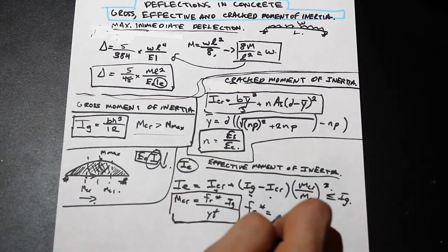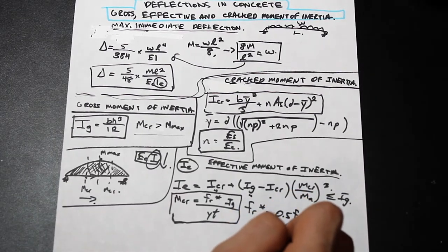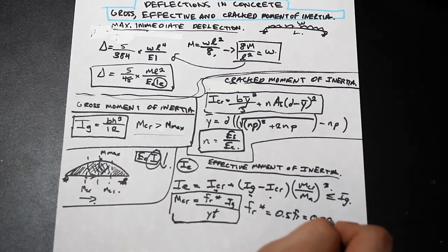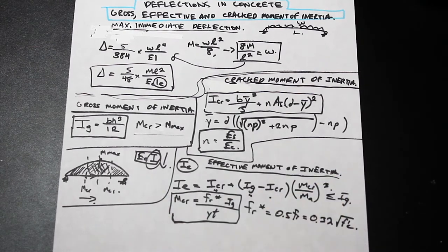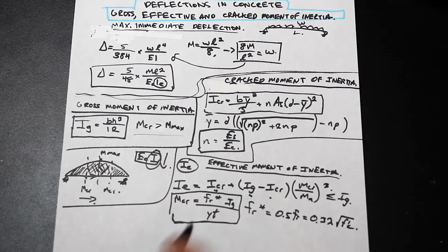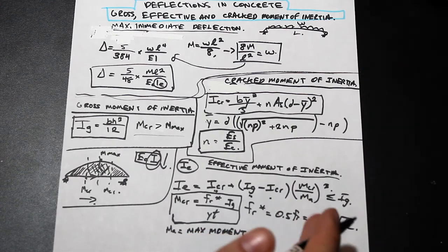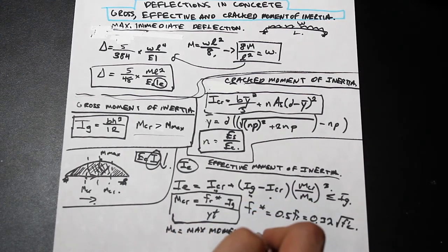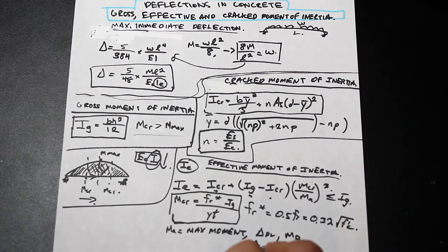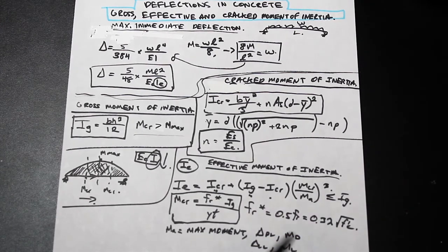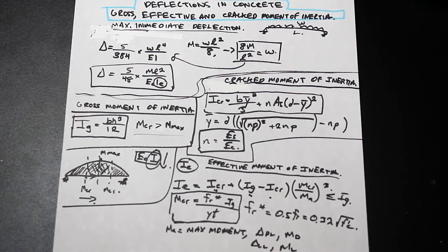Here fr* is the modified modulus of rupture, equal to 0.5 times the modulus of rupture, or 0.3λ√f'c, where λ equals 1 for normal density concrete — essentially lowering the modulus of rupture for deflection calculations. yt is the centroid of the gross rectangular shape and Ig is the gross moment of inertia. Ma is the maximum bending moment at the load stage considered: use Md for dead load deflection, Ml for live load, or the combined moment for total deflection.